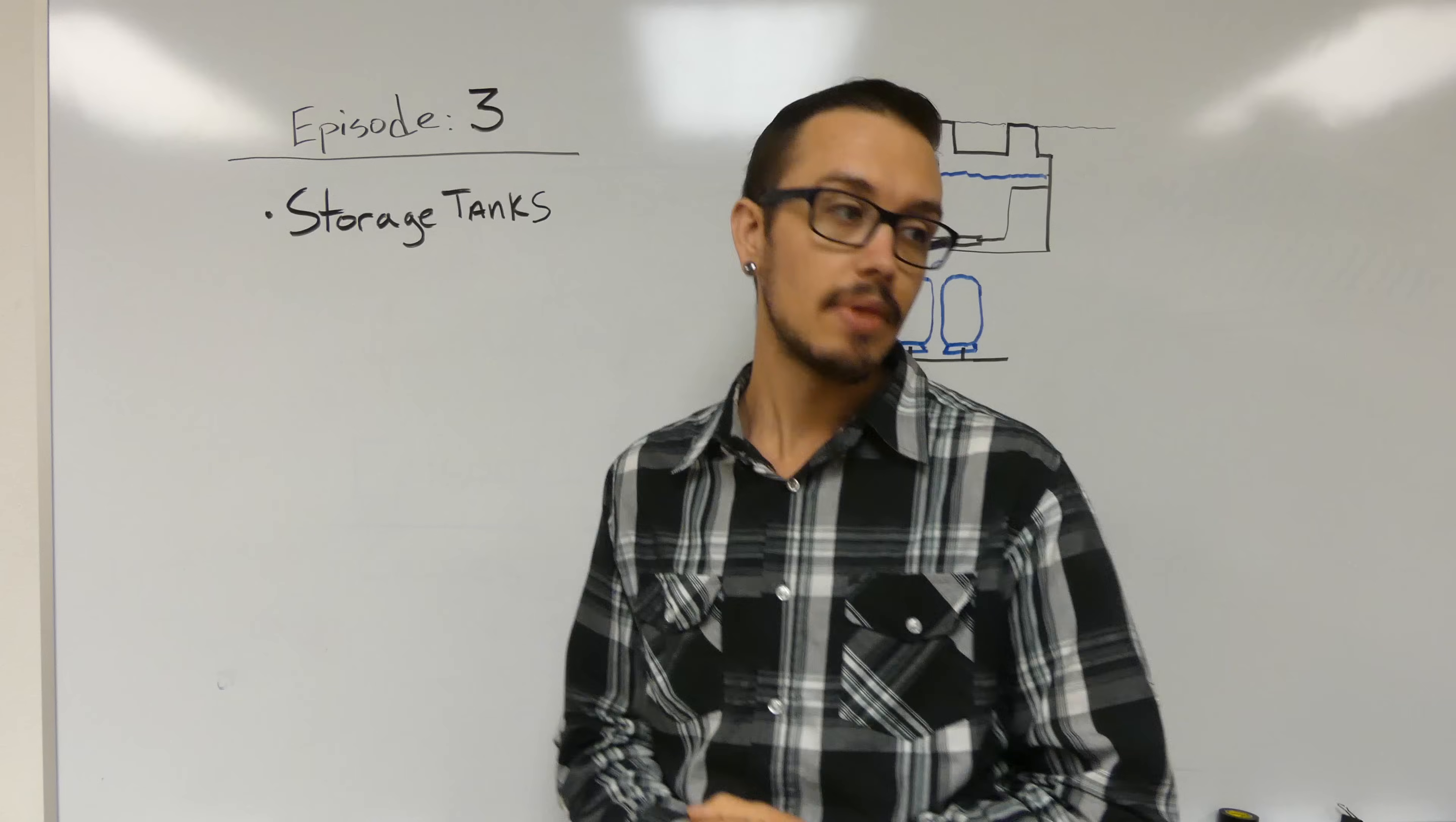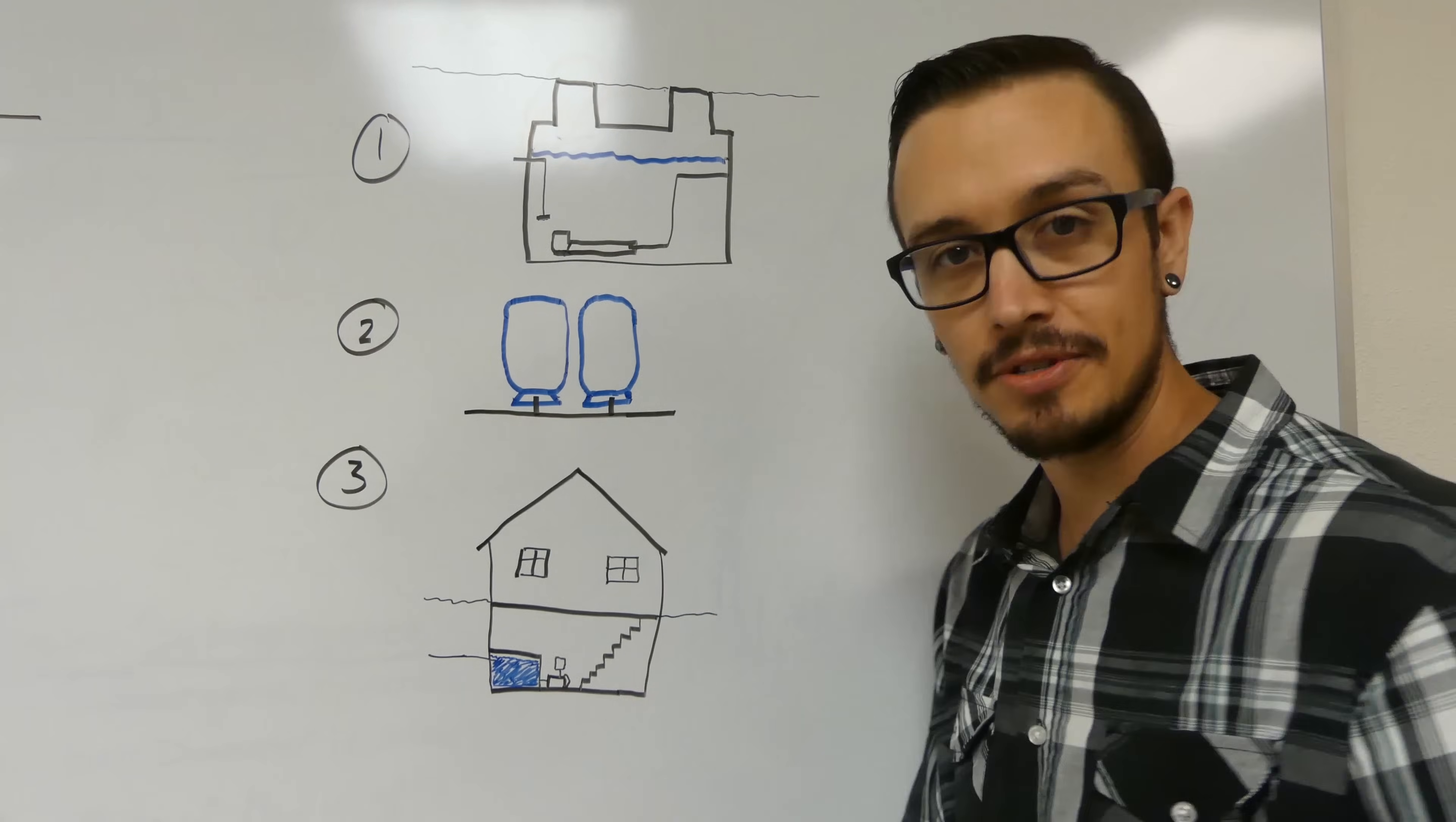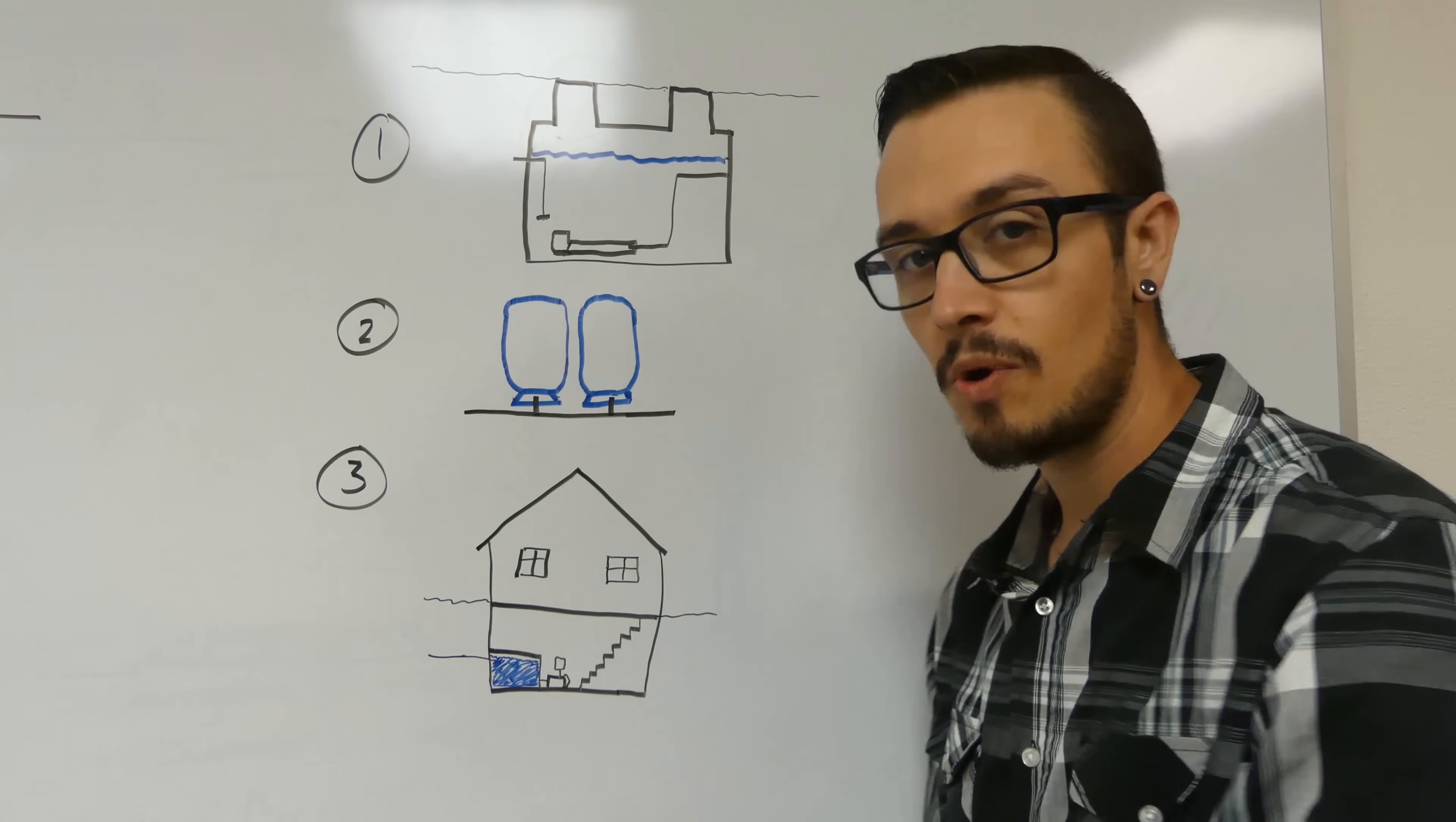Let's get to talking about some of the main types that we see out there. So here we are taking a look at some storage tanks. We've got three main options on the board, and this third one's just kind of a remix of the first one. The first one we're going to talk about here is an underground water storage tank.